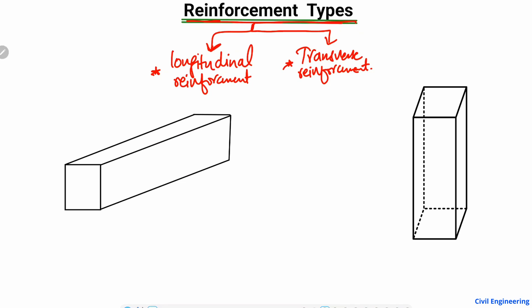There are also other types of reinforcement, for example torsional reinforcement, but these are not important in today's lecture because I'm only focusing on the two important types — longitudinal and transverse — which are most commonly used in beams, columns, footings, and slabs.